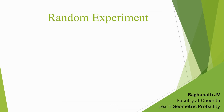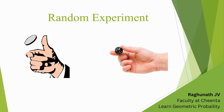Let us quickly go through the basics of probability. What is a random experiment? It is defined as an experiment whose outcome cannot be predicted with certainty. For example, in a coin toss, you cannot say with certainty that the outcome is heads. Similarly, in a dice roll, you cannot predict the number that will be the outcome. So we call such an experiment a random experiment because its outcome is random.